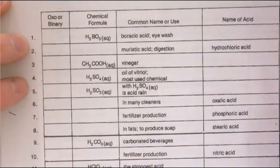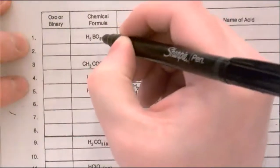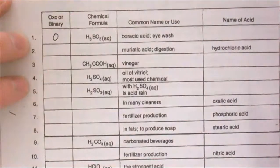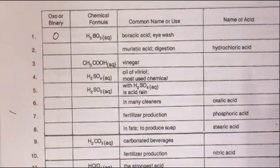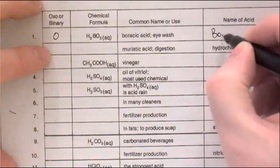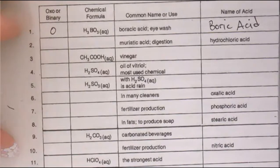Page six of your data booklet would be helpful if you don't know your complex ions. Question one: H3BO3 — clearly not binary, it has more than two elements and has a complex ion with oxygen, so it's an oxy acid. Do you recognize BO3? Since it has three H's, it must be BO3 3-. If you memorized it, that's borate. So the name of the acid would be boric acid — not hydroboric, since we only put 'hydro' for binary acids.